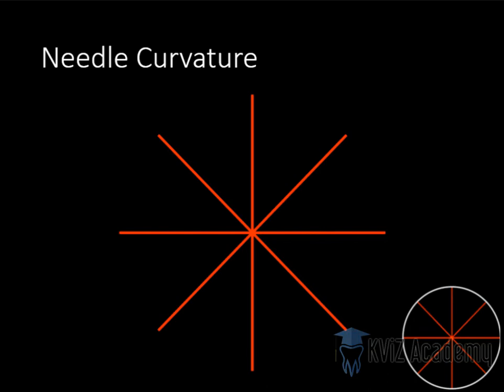So the number of quadrants covered by the curvature of the needle, that is the amount of the circle. I will explain it. These are the different curvatures of the needle.